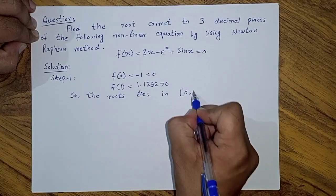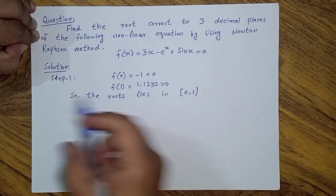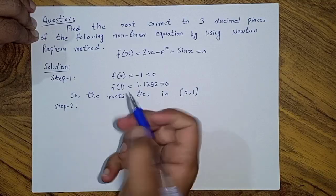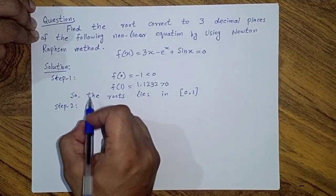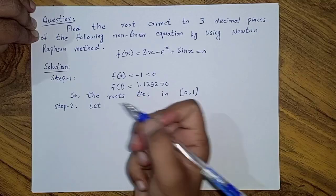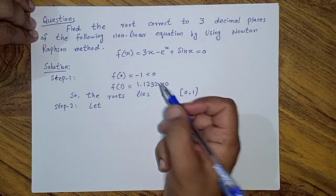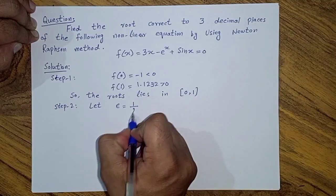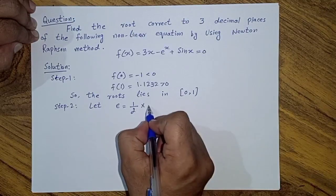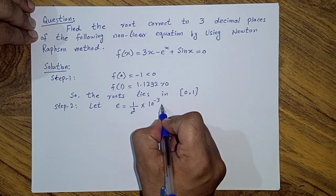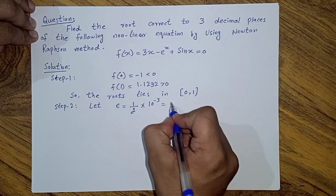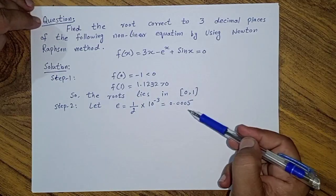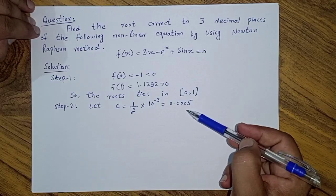Step 2: we set the convergence parameter epsilon. Let epsilon = (1/2) × 10^(-3) = 0.0005. If |f(x_(n+1))| becomes less than this value, then that point will be our real root of the nonlinear equation.